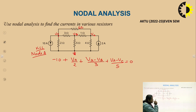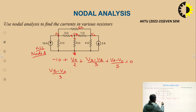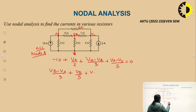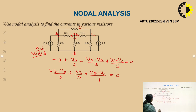Applying KCL at node B, assuming node B is at higher potential, all currents are going outward. We write: (VB − VA)/3 + VB/5 + (VB − VC)/1 = 0. All three branches connected with node B are now included in this equation, so this equals zero. This is equation 2 for node B.